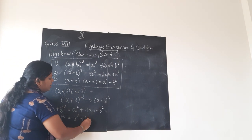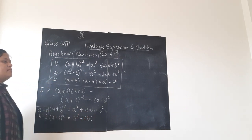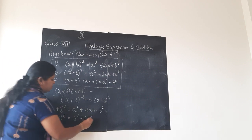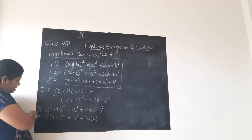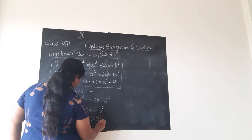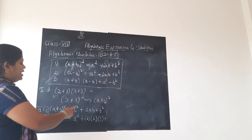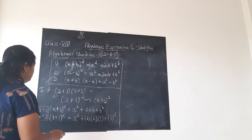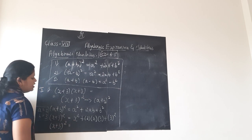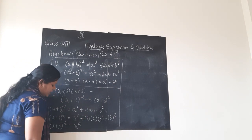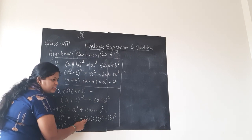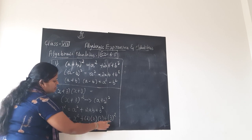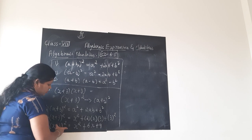Make a habit of writing all the terms in the brackets. 2 into a into b: what is a? x. What is b? 3. So 2 into x into 3 is 6x. Plus b squared: what is b? 3. So 3 squared is 9. Therefore x plus 3 whole square equals x squared plus 6x plus 9.